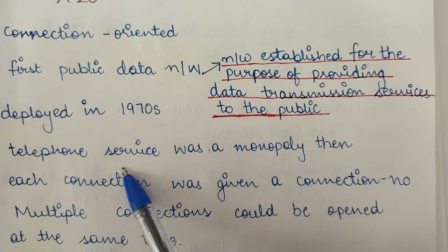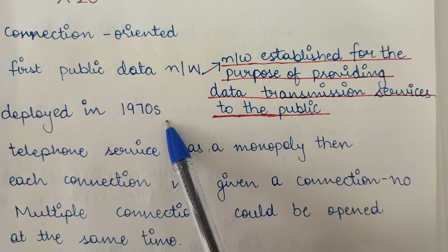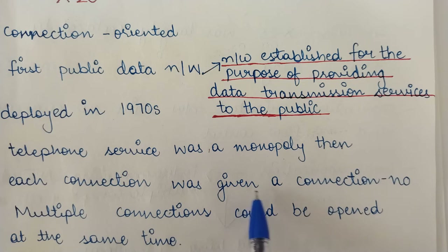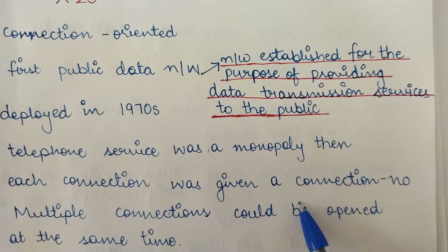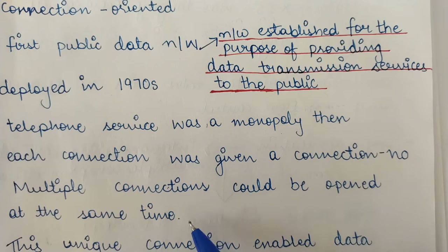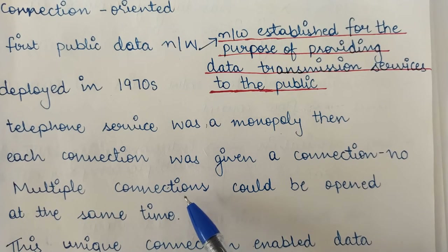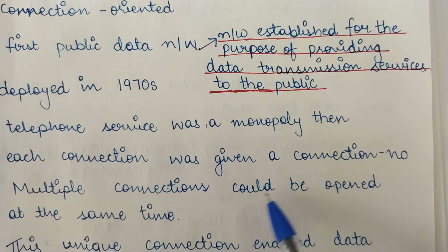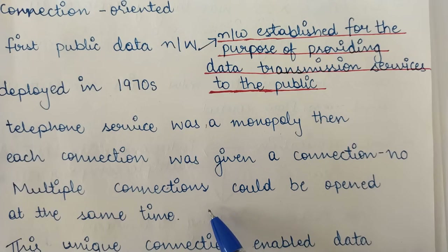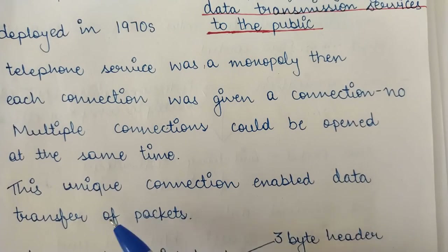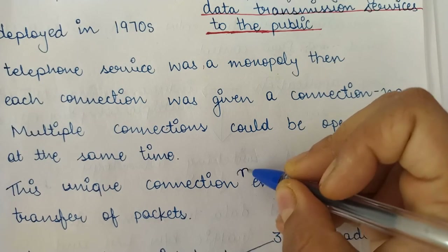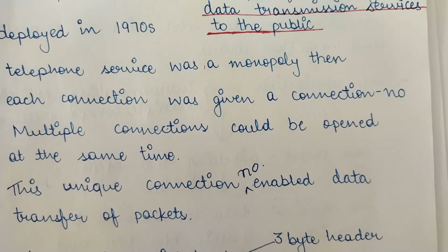Each connection in an X.25 network was given a connection number. The simple reason behind providing a connection number was that multiple connections could be opened at the same time. When multiple connections were open simultaneously, it was necessary to give each connection a unique number so that connections could be identified easily. This unique connection number enabled the data transfer of packets.